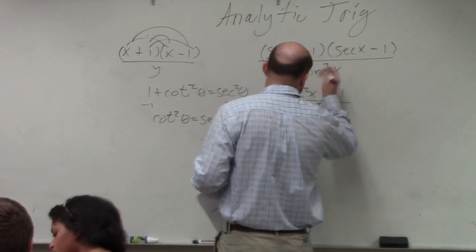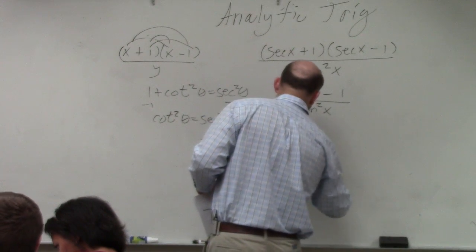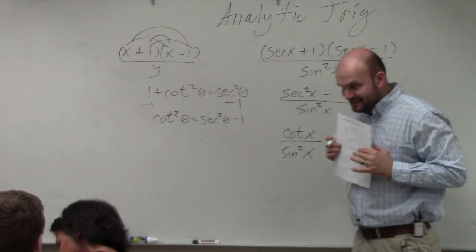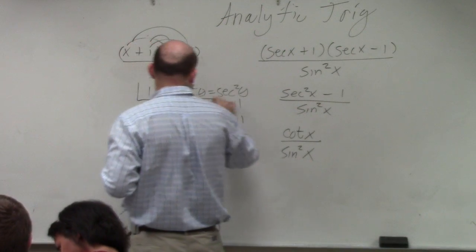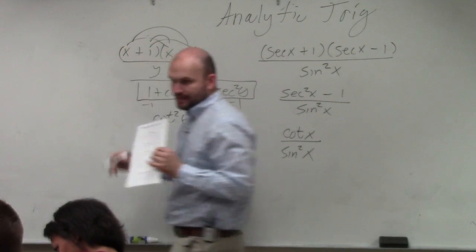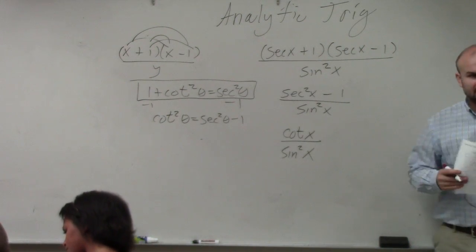Cotangent, now this problem is x, though, not theta. Where do I get what? Again, this will be given to you. This is a Pythagorean identity. It will be given to you. Okay? So you will eventually have these in front of you.